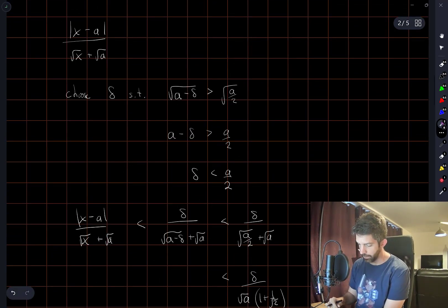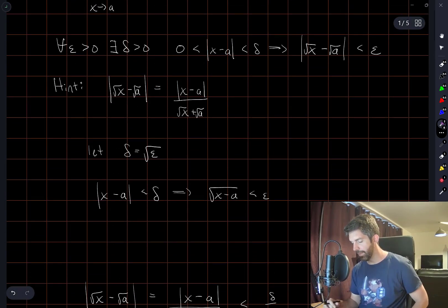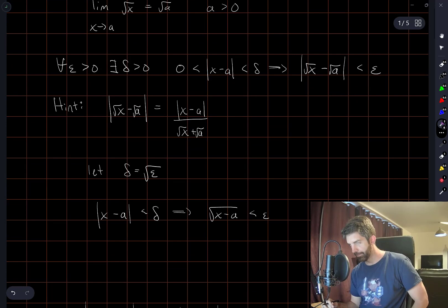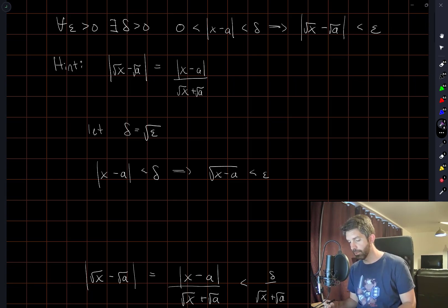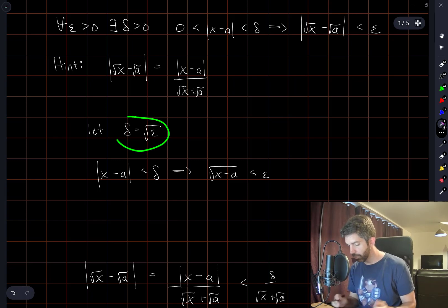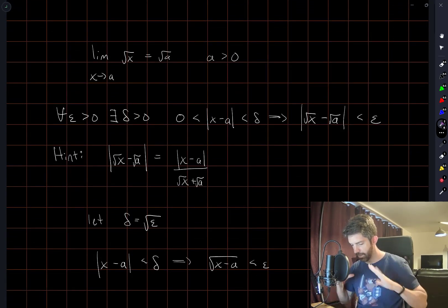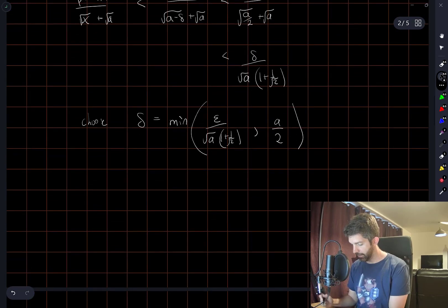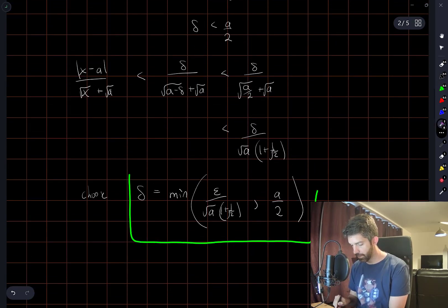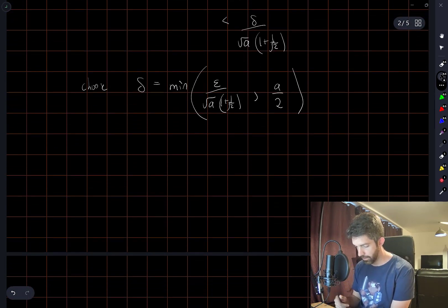This took quite a bit longer than I expected, because I was bouncing back and forth between many different ideas and couldn't focus on one thing. The original idea I had — to choose delta equal to the square root of epsilon — showed that working through the algebra is more difficult than expected. What I've done is come up with a choice of delta in terms of both epsilon and a that I'm pretty sure will work. So let's work through the argument.